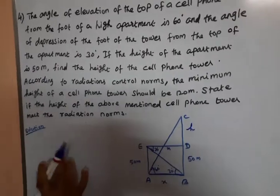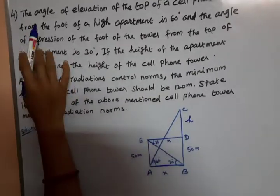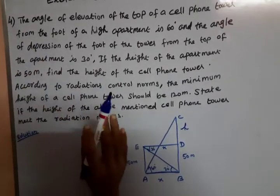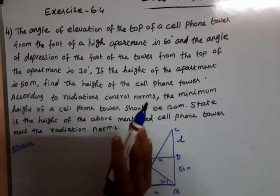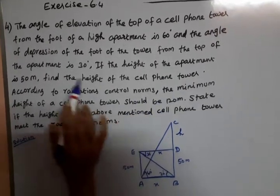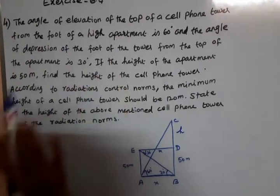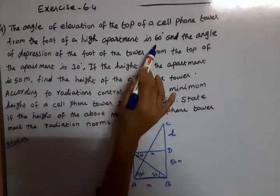The question looks good. Angle of elevation of the top of the cell phone tower from the foot of the high apartment is 60 degrees.